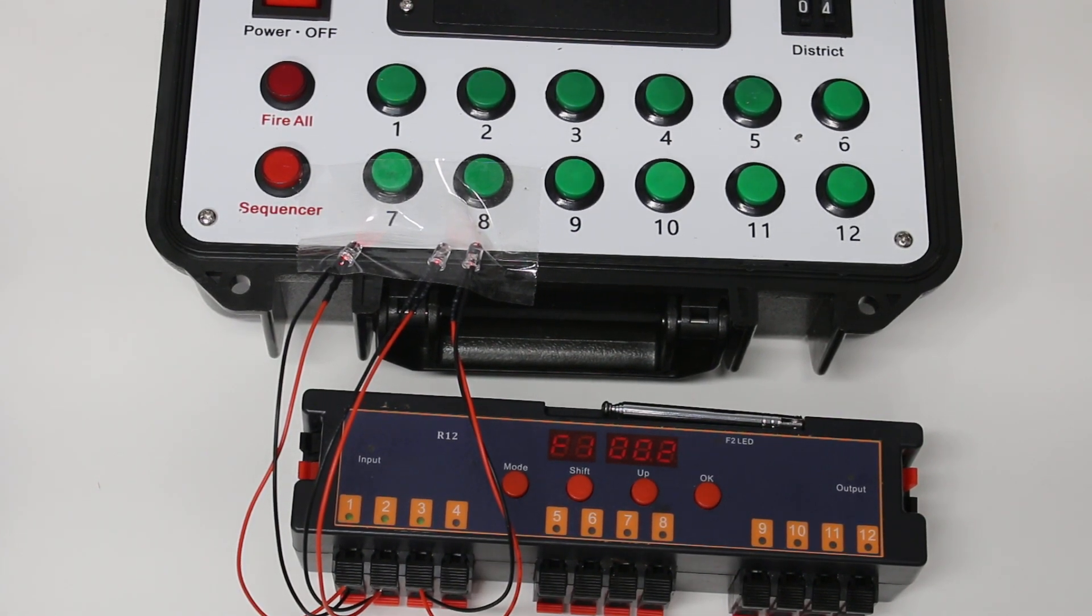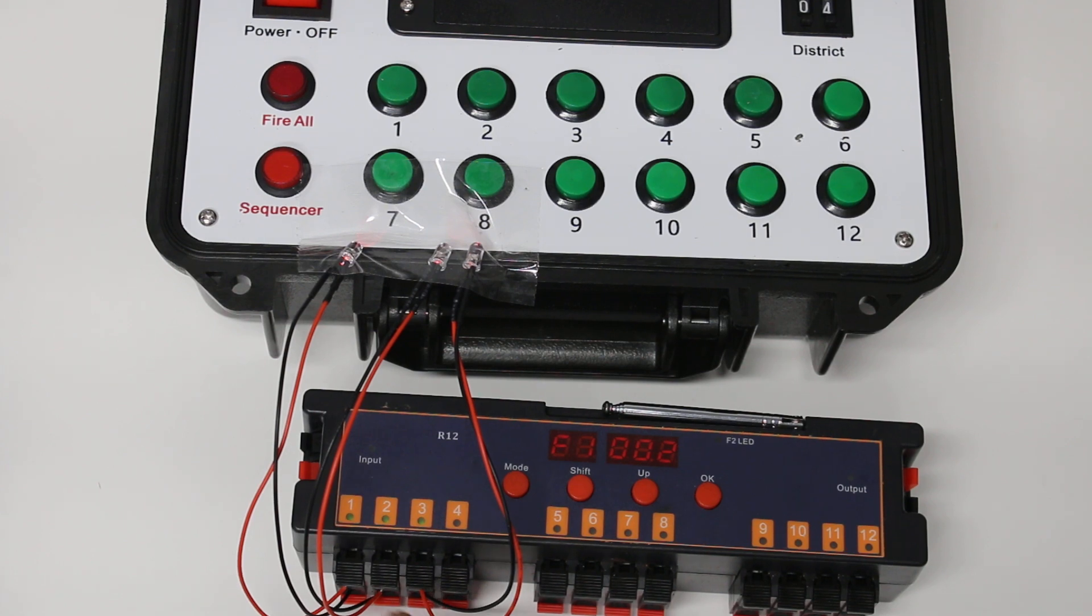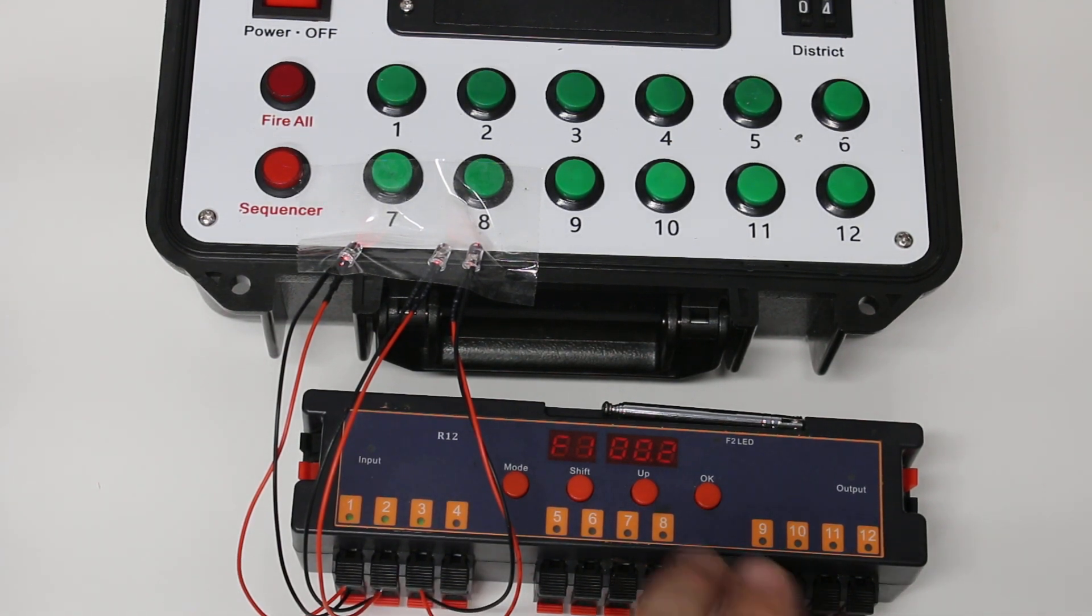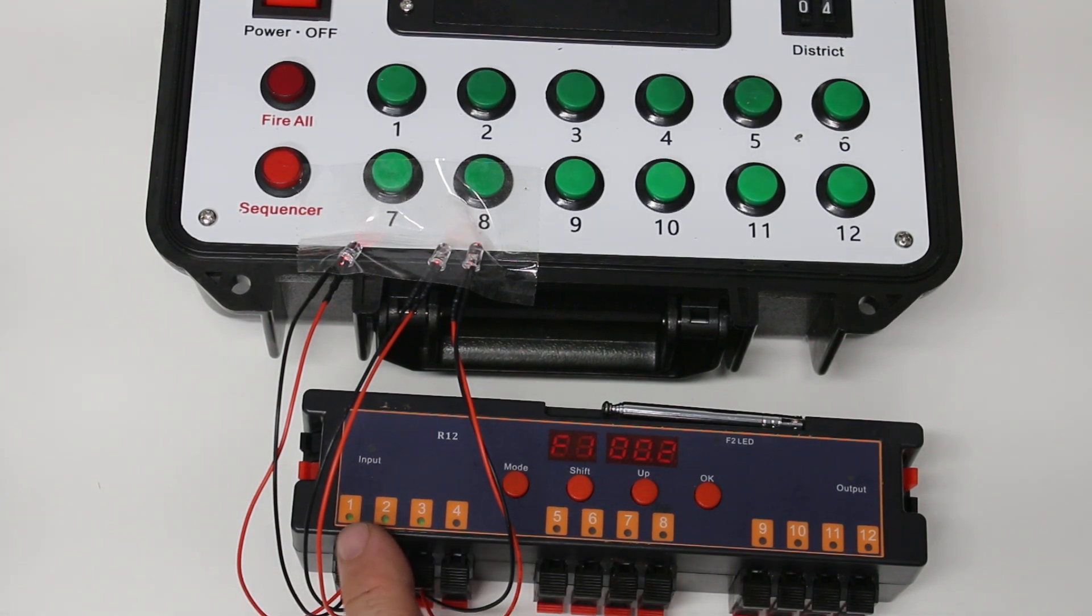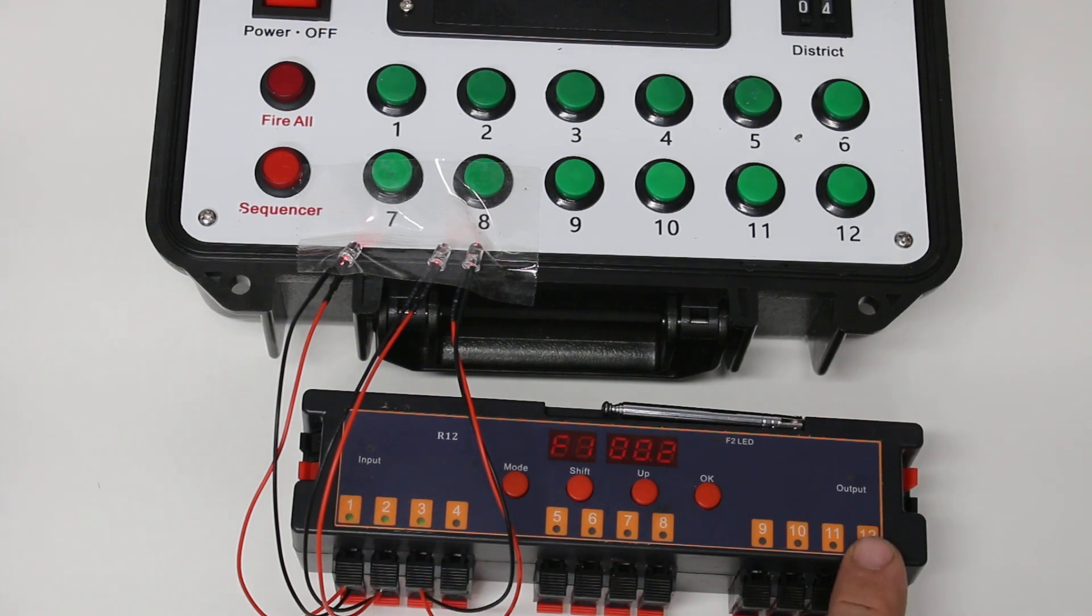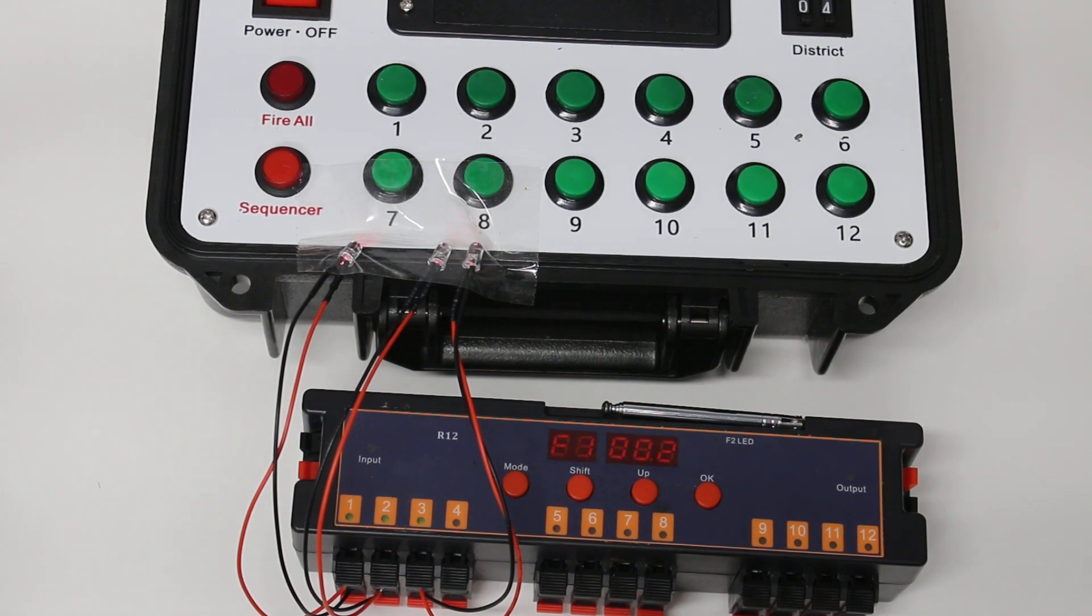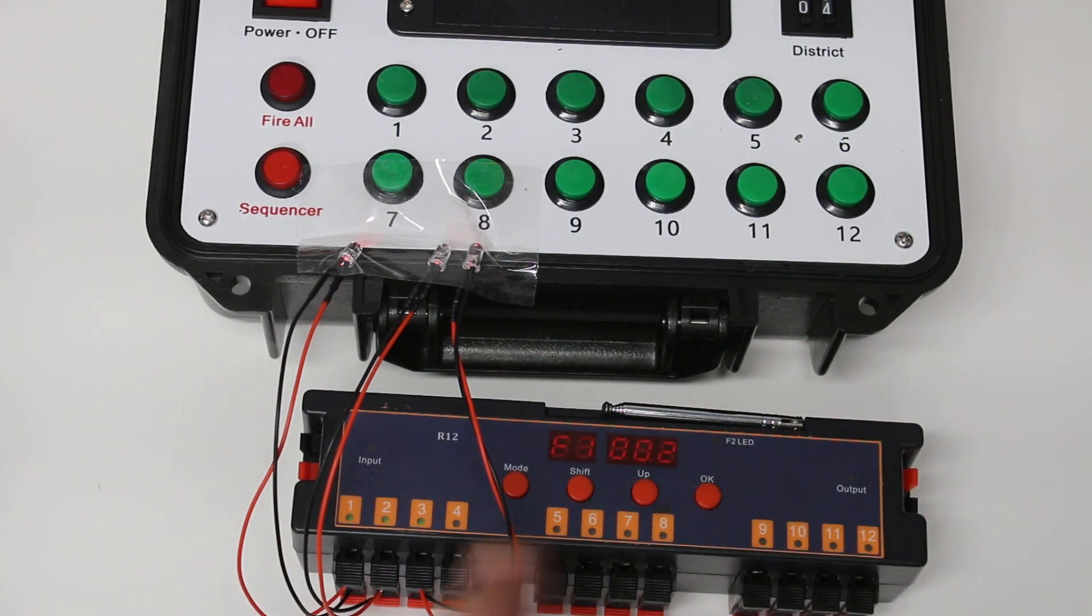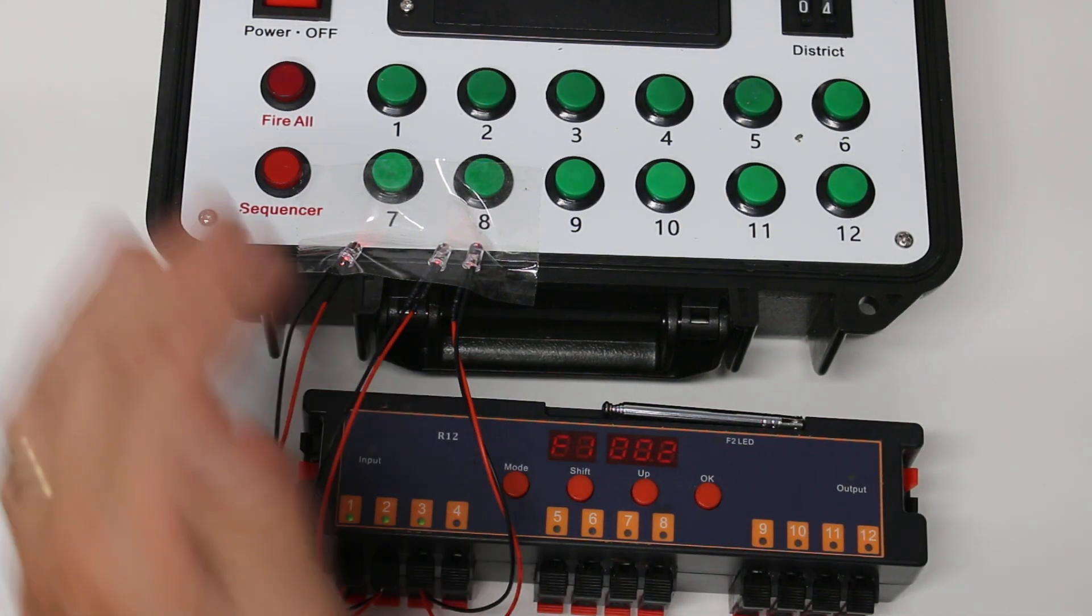The first thing I want to show you is the set interval for the entire Q1 through 12. I actually did this for my show this past year. I used an R12 set to every half second from 1 to 12. I spaced my individual mines out, the pro items at about 15 feet apart, and just a nice little sequence as it moved from 1 through 12.